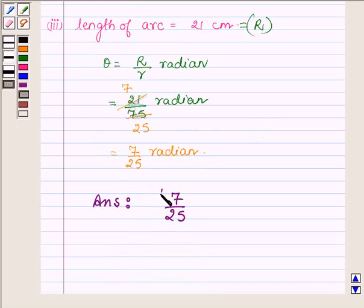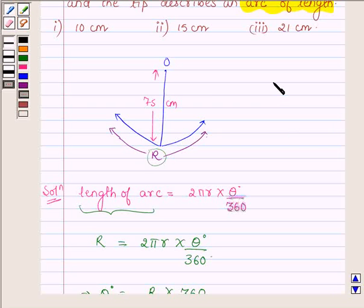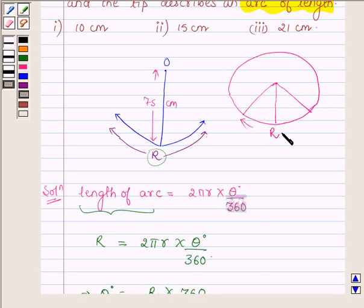And do remember that when a pendulum swings, it makes a circle, and we are considering here the length of the arc, which we have denoted by capital R, which in three cases are 10 cm, 15 cm, and 21 cm respectively.